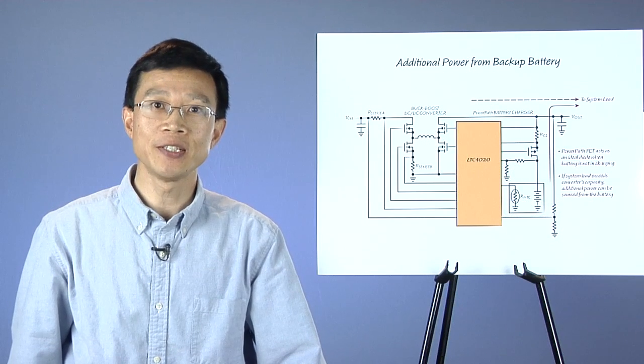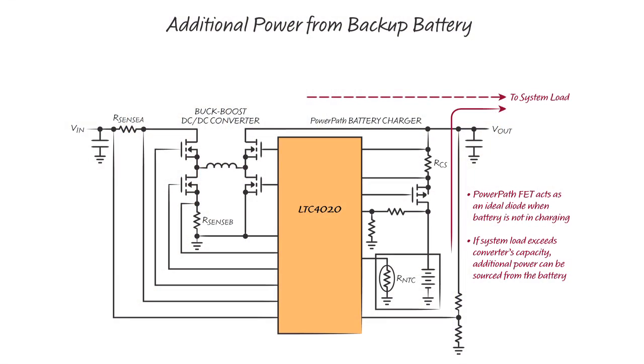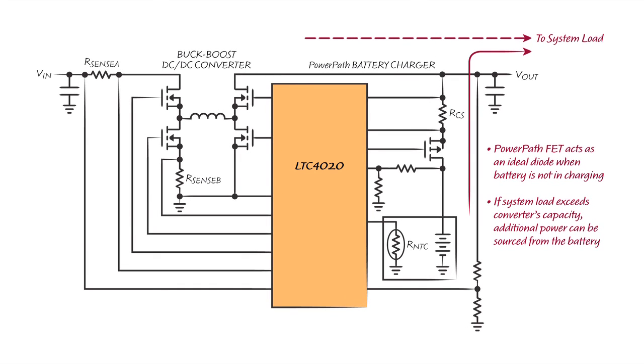When the battery charger is not in a charging cycle, the LTC4020 automatically configures the power pass FET as an ideal diode. This allows the battery to remain disconnected from the converter output in normal operation.